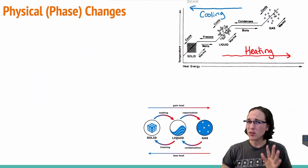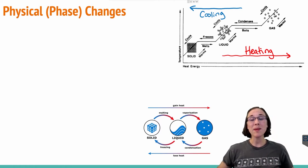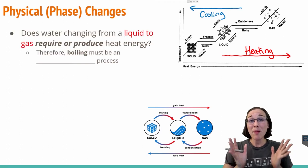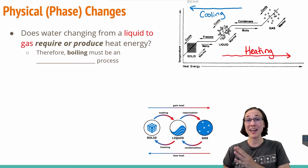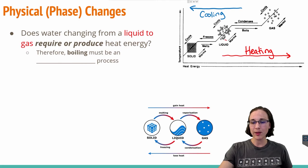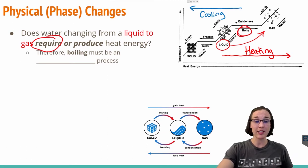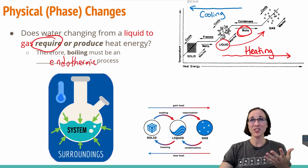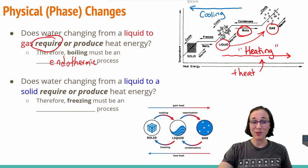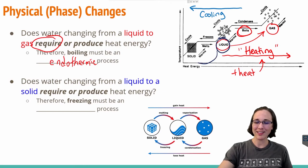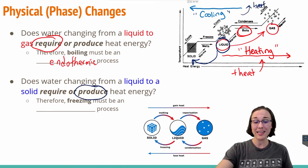Phase changes also have tie-ins to thermochemistry, since we're talking about heat energy when heating or cooling. Phase changes can be classified as exothermic or endothermic. Water changing from a liquid to a gas is a heating process, so it requires energy — therefore boiling is an endothermic process. What about water going from a liquid to a solid? That's cooling, and to cool down you have to get rid of heat. Getting rid of heat means you are producing heat, so the process of freezing is actually exothermic.